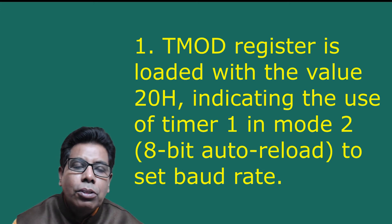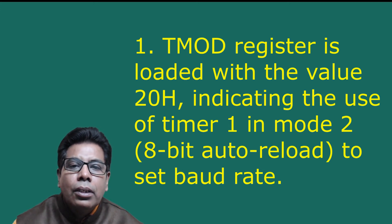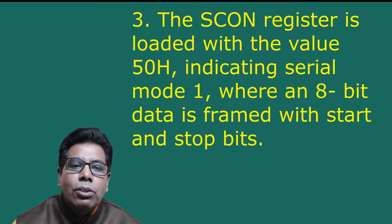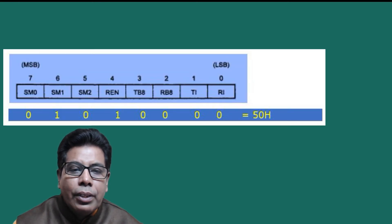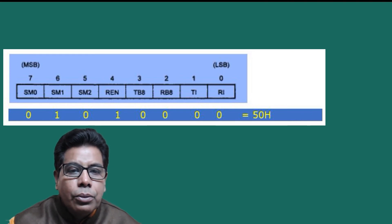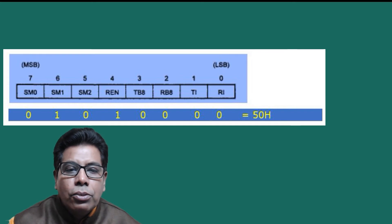Steps to program 8051 for serial data transfer: Step 1 — load TMOD with 20h (Timer 1, Mode 2, 8-bit auto reload) to set the baud rate. Step 2 — load TH1 with the appropriate value to set the baud rate for serial data transfer. Step 3 — load SCON with 50h, indicating serial Mode 1 where 8-bit data is framed with start and stop bits for 10-bit transmission. The SCON bits are: SM0 SM1 = 01 (Mode 1), SM2 = 0, REN = 1, TB8 = 0, RB8 = 0, TI = 0, RI = 0, giving 50h.